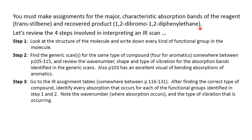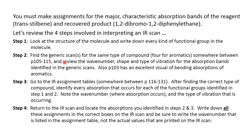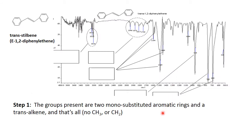Since this is the third time through, I won't review all four steps again, but I want to mention that in step two we look for the generic scan. In step one, we identify the groups present in the structure of trans-stilbene — two mono-substituted aromatic rings and one trans alkene, and that is all. No methyl, no methylene groups.